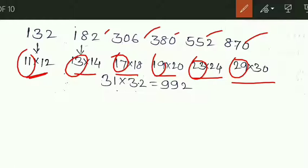A prime number is a number which can be divisible only by 1 and the number itself. So these prime numbers are each multiplied with their next consecutive integer. Definitely, the next prime number is 31, and its next integer is 32. So 31 × 32 = 992. This is the next number of the given series, so this is the right answer.